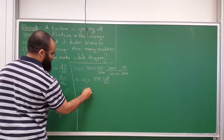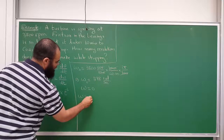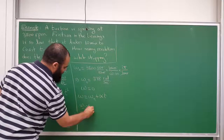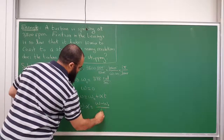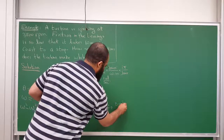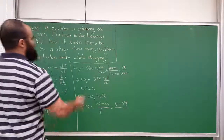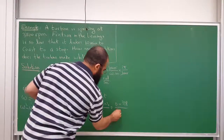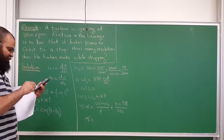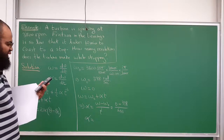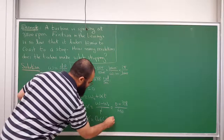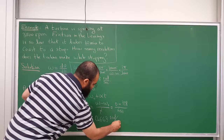Since it stops, omega final equals 0. Using ω = ω₀ + αt, we get alpha = (ω − ω₀) / t = (0 − 398) / 600 seconds (since 10 minutes = 600 seconds). So alpha is approximately −0.663 radians per second squared. It's negative because it's decelerating.